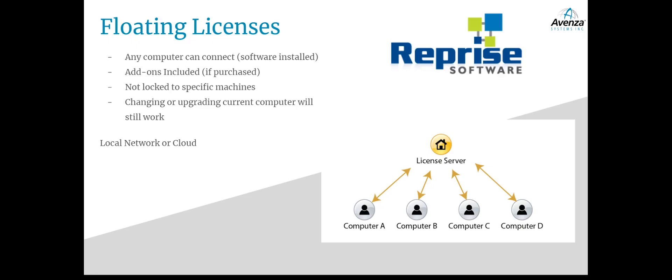When one computer is done using the software they can check it in, thus making a seat available. Additionally, there isn't a limit to the number of computers that can have the software installed — the limiting factor is just the number of seats available. You could have a hundred computers with Map Publisher or Geographic Imager installed, but if you only have two seats then only two of those 100 computers can use it at once. Another benefit is you don't need to dedicate certain computers to using the software, since any computer can technically access it.